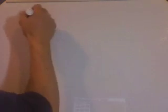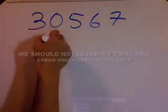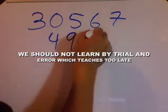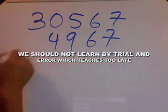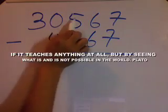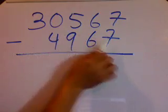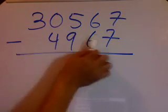Okay, I wanted to move to subtraction now. Let's see, 30567 take away 4967. Let's see how this one works. Remember we got one, two, three, four, five numbers at the top. One, two, three, four numbers at the bottom, so I just want to make sure that the one at the bottom is smaller than the one at the top.